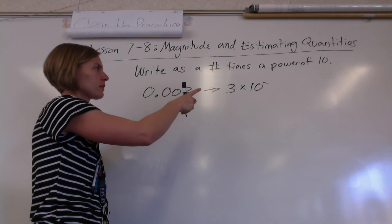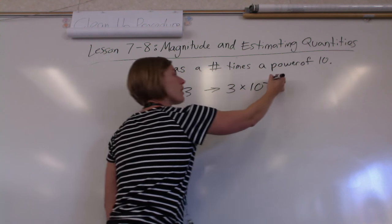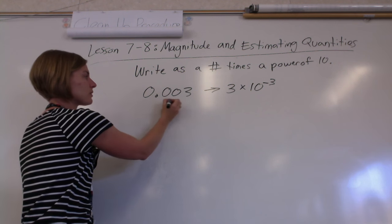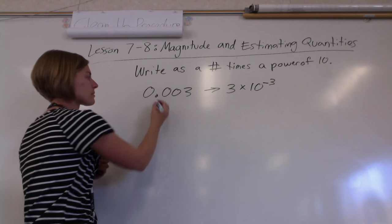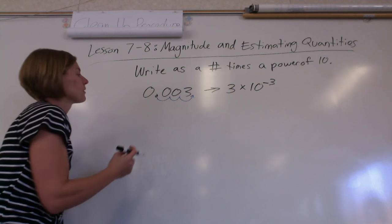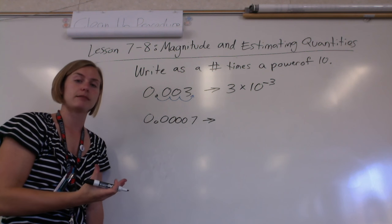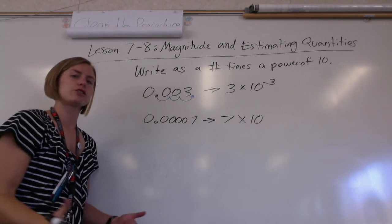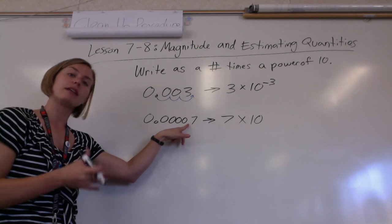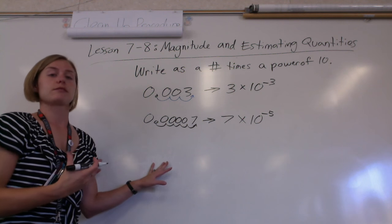Another way of thinking about it — and this is actually how I normally think about it — is to think about how many times you need to move the decimal so that this becomes a regular three. If you move the decimal once, twice, three times, then that three becomes a regular three. Let's try 0.00007. Keep that seven, and it's times 10 to some power. There are four zeros, so one less gives us negative 5. Or you can count how many places you move the decimal — that's five. Either way you get negative 5.